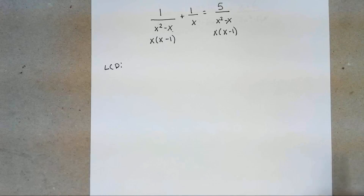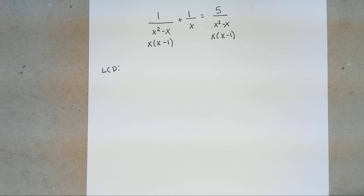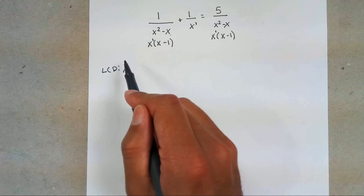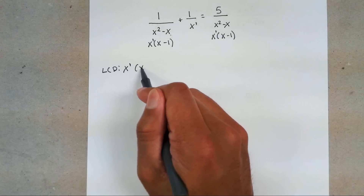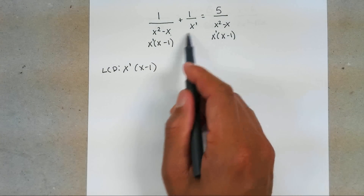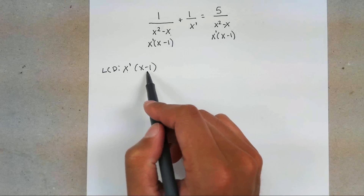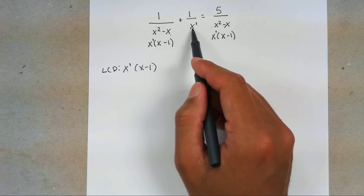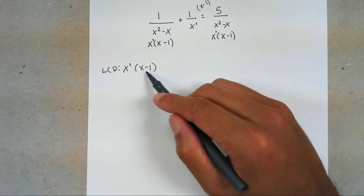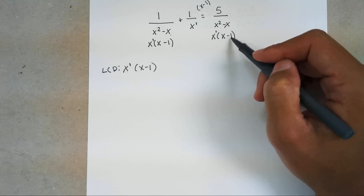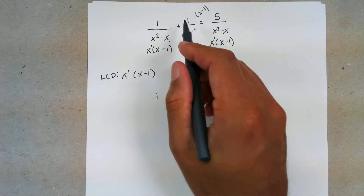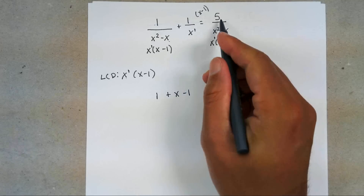Your LCD is everything your denominator has. Remember the order: numbers, variables, then parentheses. There are no outside numbers, but there is a variable X — it appears to the first power throughout, so just X. Any parentheses? X minus 1. So your LCD is X times X minus 1. Now figure out what to multiply. The first denominator is X times X minus 1 — not missing anything. The second denominator is just X — missing X minus 1, so multiply the numerator by X minus 1. The last denominator is also X times X minus 1 — not missing anything, so leave it alone. Focusing on the tops: the first gives 1, the second gives 1 times X minus 1 which is X minus 1, and the last is 5.